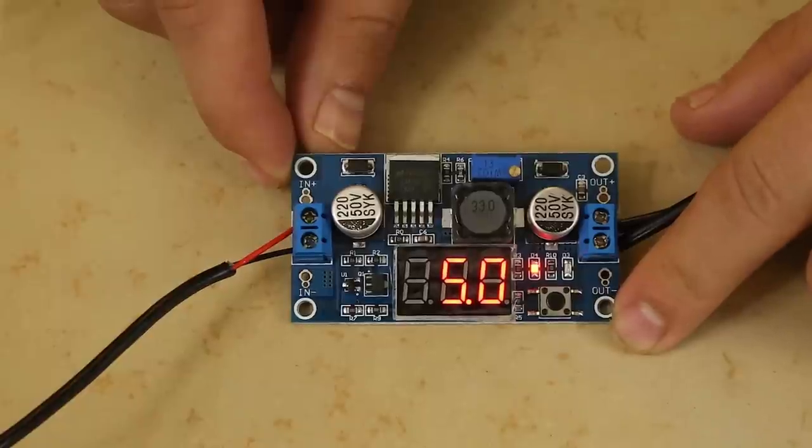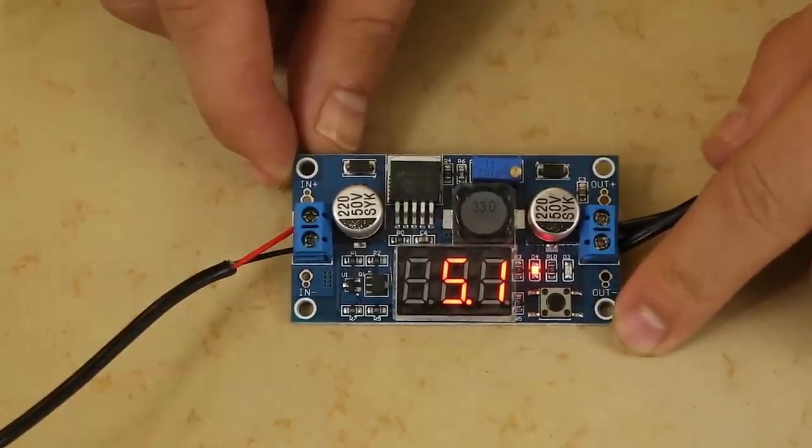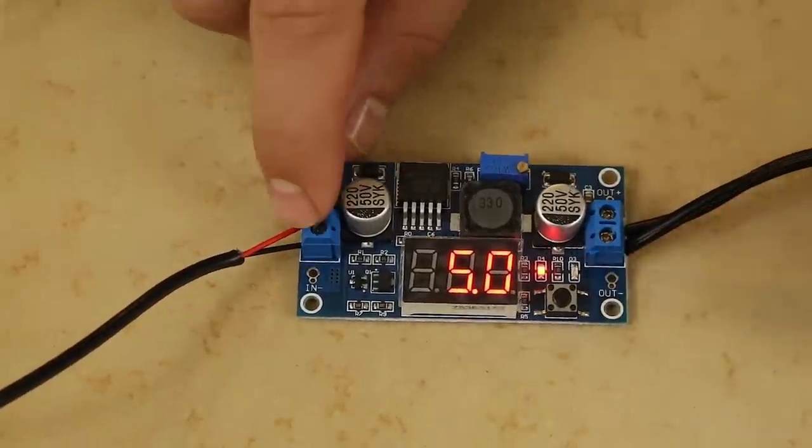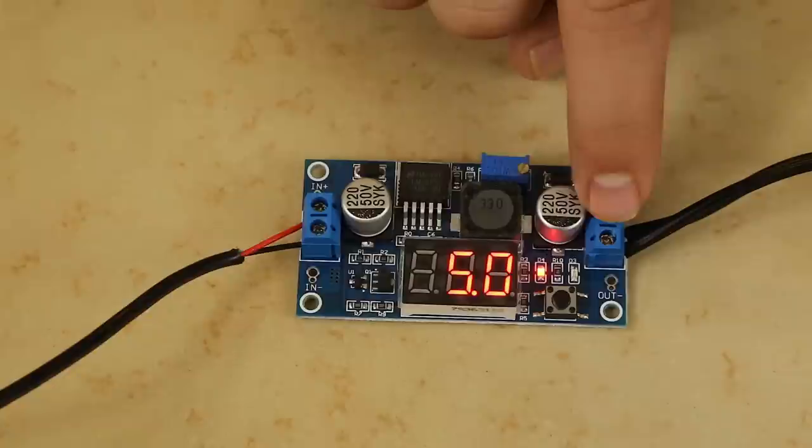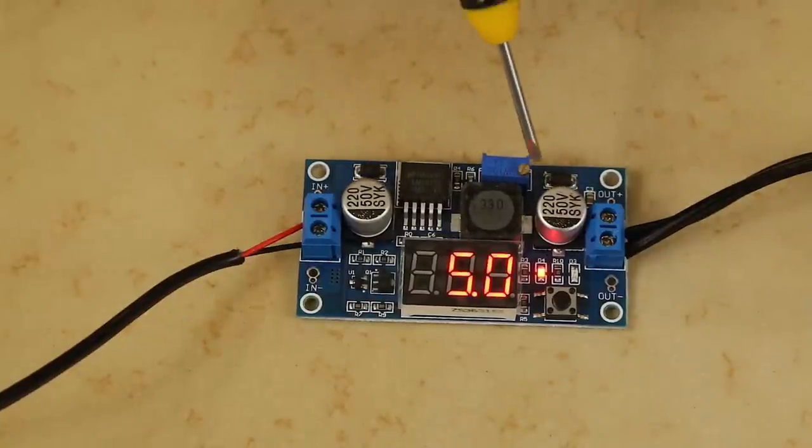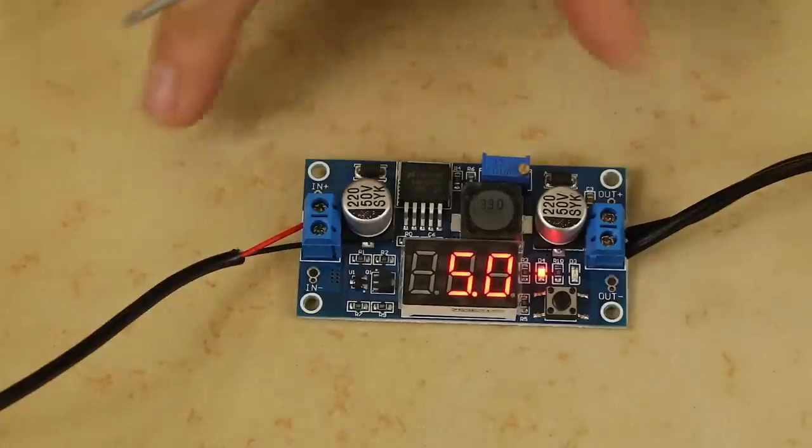This converter is made by a company called DROC and it's a pretty small device, pretty simple, and does a great job. Basically you've got your inputs right here, you've got your outputs there, you've got a little dial right there which you can use to adjust what your output voltage is, anywhere from 5 volts to 40 volts.